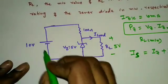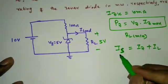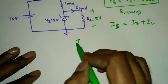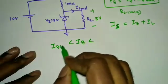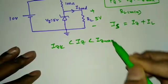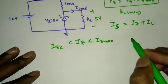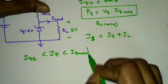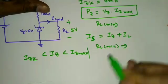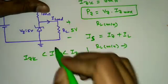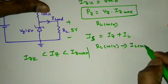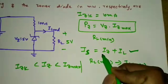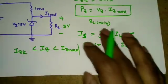In this problem the input voltage is fixed, so the source current Is is fixed. The Zener current varies from Izk to Iz_max, so the load current IL also varies. To find RL minimum, we note that minimum resistance means maximum current through it. When IL is maximum and Is is constant, Iz must be at its minimum value, which is Izk.